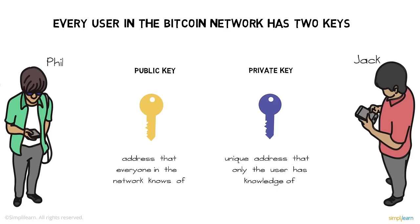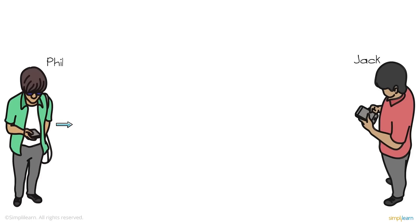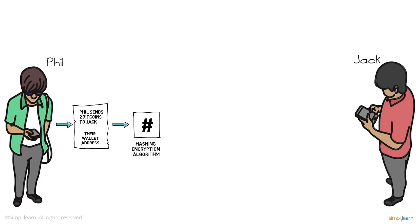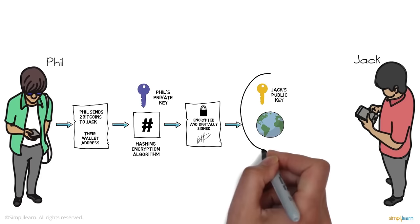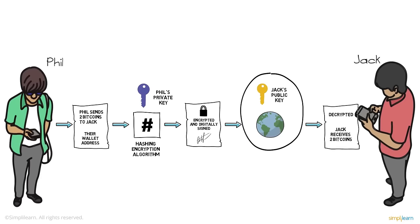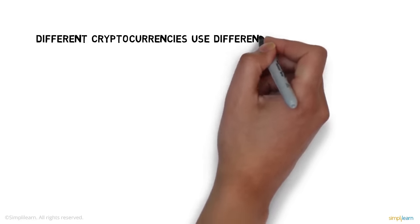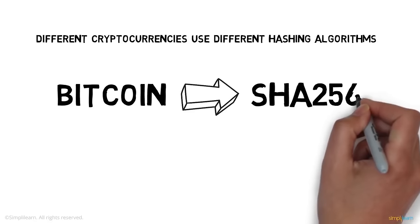Phil passes the number of bitcoins he wants to send to Jack, along with their unique wallet addresses, through a hashing algorithm. These transaction details are encrypted using encryption algorithms and Phil's unique private key, digitally signing the transaction to indicate it came from Phil. The output is transmitted across the world using Jack's public key, so the transaction can be decrypted only by Jack's private key.